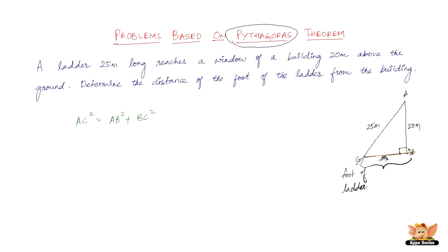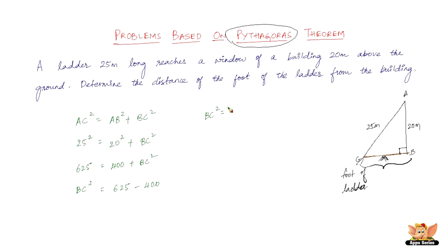The hypotenuse squared equals the sum of the squares of the other two sides. AC is 25, so AC² is 25² = 625. AB is 20, so AB² is 20² = 400. We need to find BC, so BC² = 625 − 400 = 225. Therefore BC = √225 = 15.